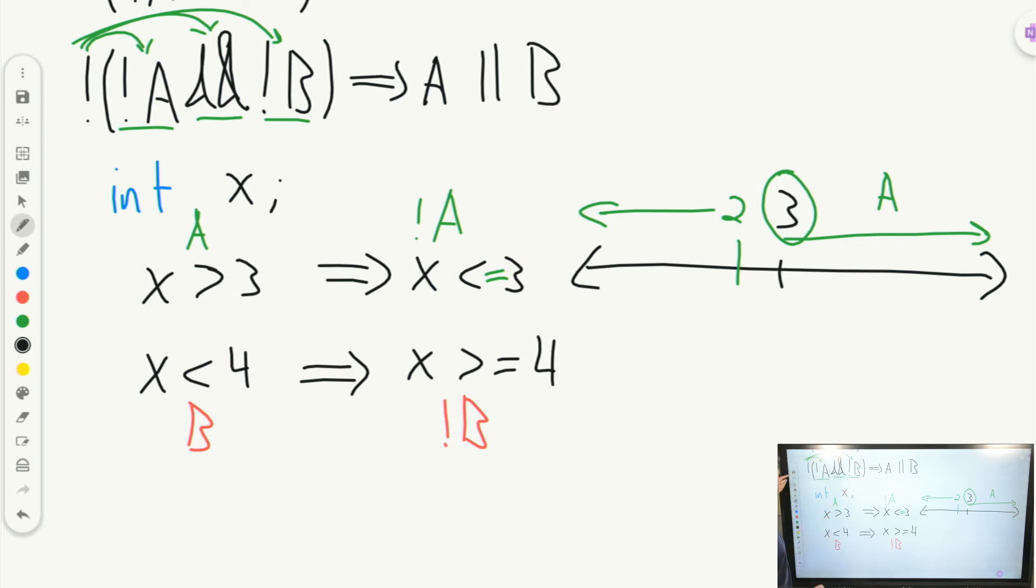So whenever we're doing this distributive property up here, we need to keep in mind if we're doing a not of A, then we need to add our equal sign when we're going over here to our regular A. Or we're grabbing not A and it has an equal sign, we need to take out that equal sign when we flip the greater than or equals to.